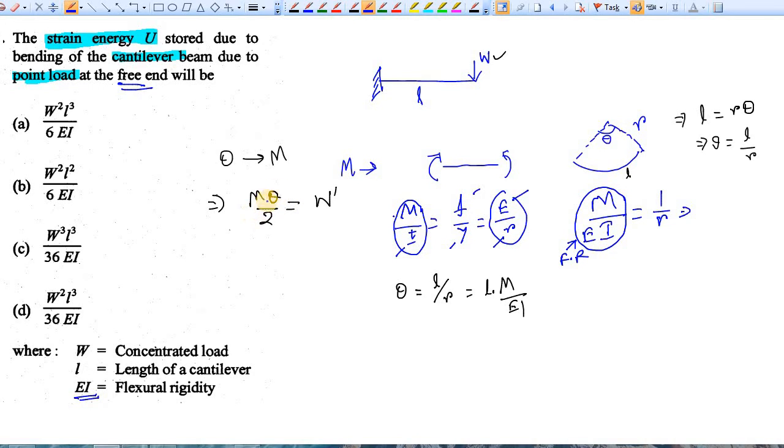This is valid for very small rotation, let's say d theta, and d theta tends to zero. So the work done dW is moment times d theta by 2. So dW is M by 2, and d theta - in that case the length is also very small, it is dx which tends to zero.